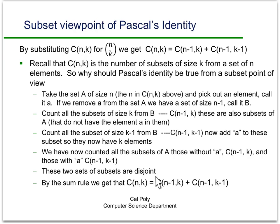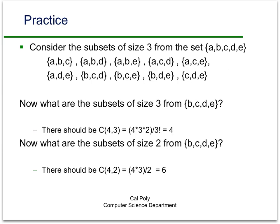It's pretty easy to see these two sets are disjoint because the ones here have a in them, the ones here don't have a in them, so they can't have any of the same subsets in them. And by the sum rule then we get that the number of subsets of size k from a set of size n is equal to the number of subsets of size k from a set of n minus 1 plus the number of subsets of size k minus 1 from n minus 1. So again, this is just Pascal's identity from a different perspective.